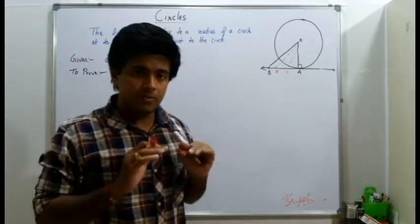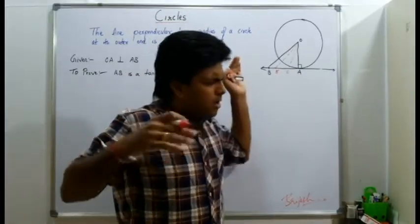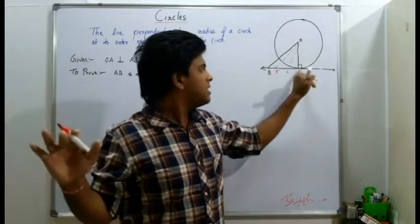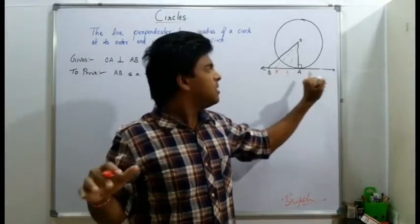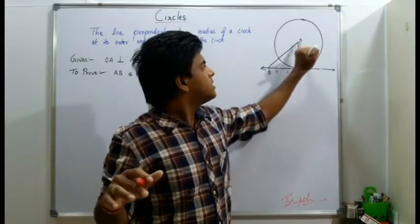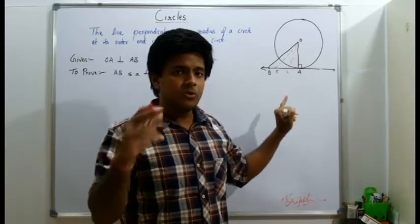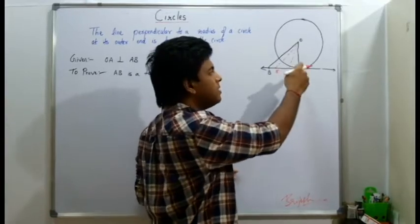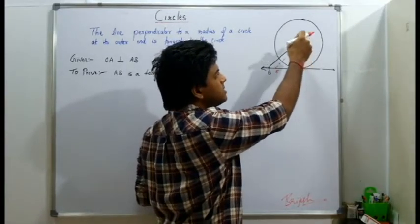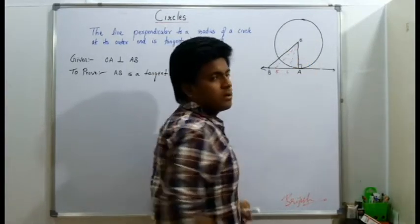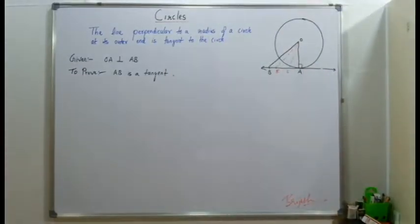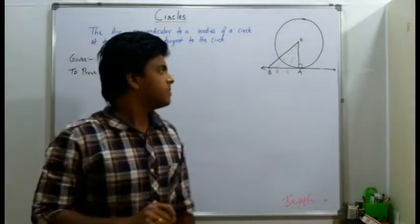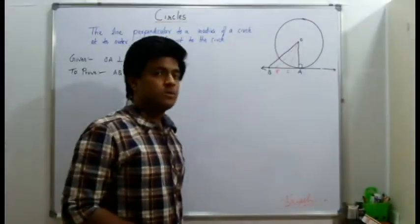What does that mean? All points other than A are going to be greater than OA. So there is only one point, there is only one point A, which is...